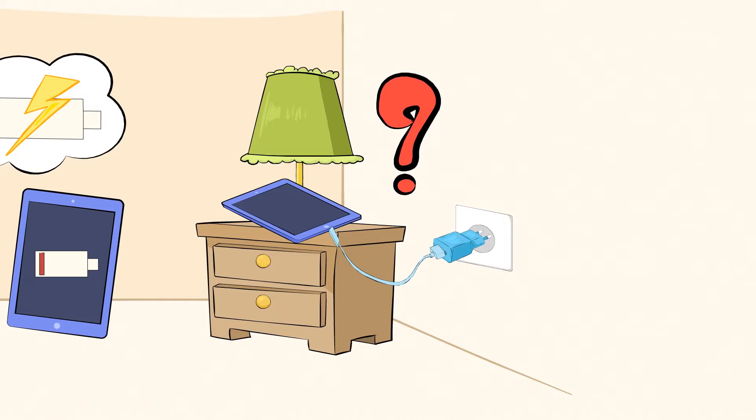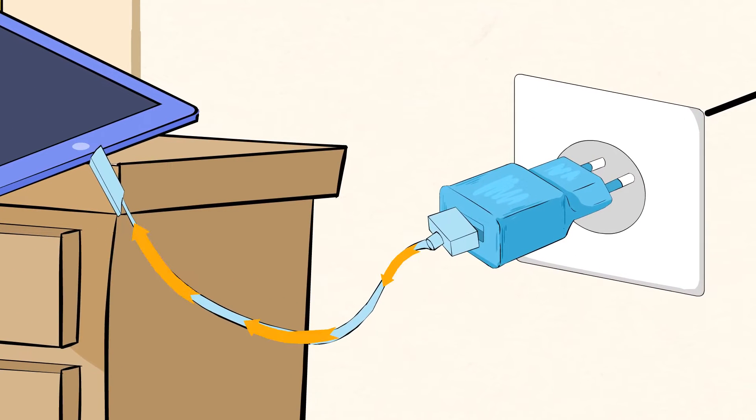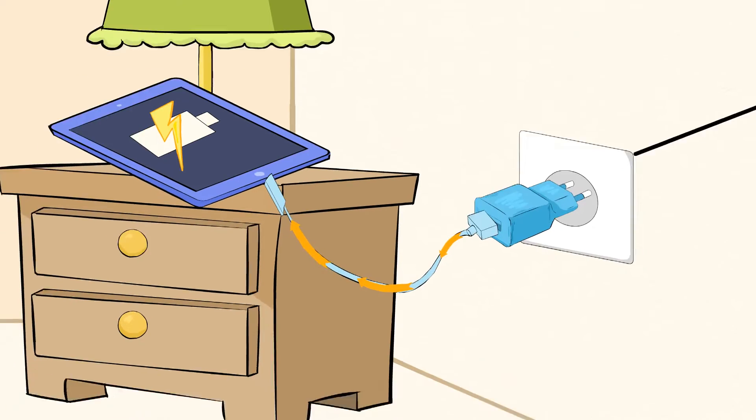Well, it's all about energy. When Mia plugs her device into the wall, the electrical energy will be transferred through the wire and then to the battery of her tablet, where it'll be stored until Mia uses it again.